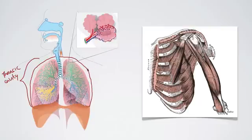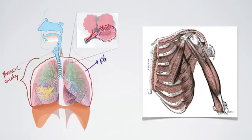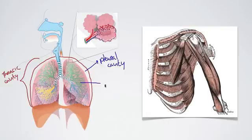In the thoracic cavity, we have this space right here and that space is called the pleural cavity. And then we have one more cavity inside the lungs, and we're going to call that the pulmonary cavity.